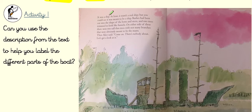It was a ship. At least it wasn't a real ship. But you could see it was meant to be a ship. Bushes had been cut into the shape of the bows and stern.